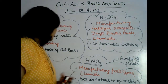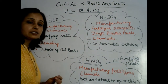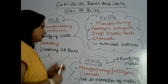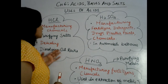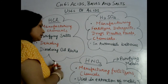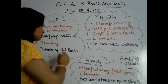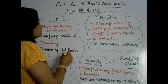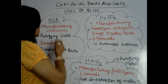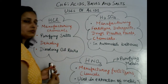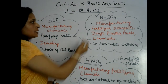Hydrochloric acid is also used in dissolving oil rocks. Oil rocks are the rocks where oil is found, and this acid is used to break that rock and get oil from it — basically in the drilling and dissolving of rock to extract oil. So these are the uses of hydrochloric acid. Now, sulfuric acid.